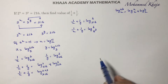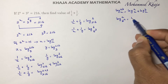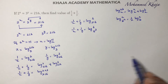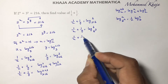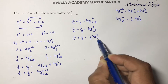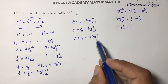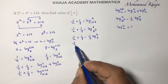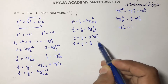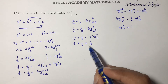You can write 216 as 6 cube. Using the formula log a to the base b power n equals 1 by n log a to the base b, we get 1 by x plus 1 by y equals 1 by 3 log 6 to the base 6. Since the logarithm of a number to the same base is 1, log 6 to the base 6 equals 1, so 1 by x plus 1 by y equals 1 by 3.